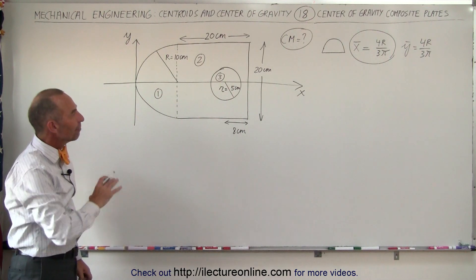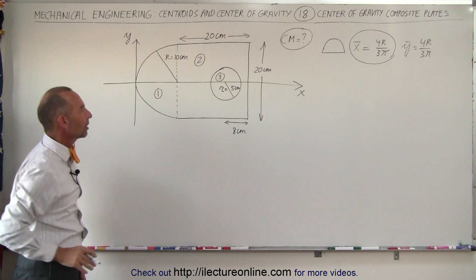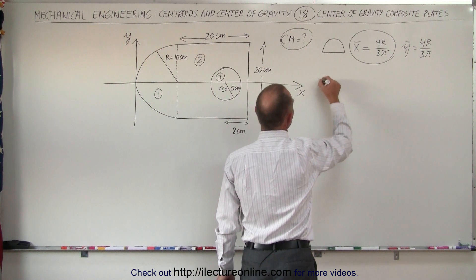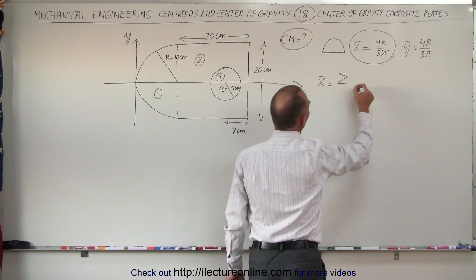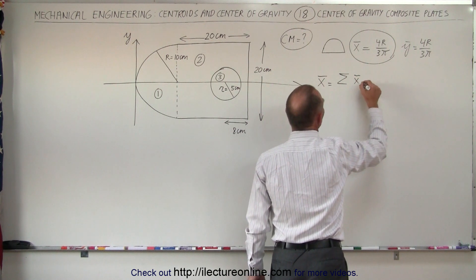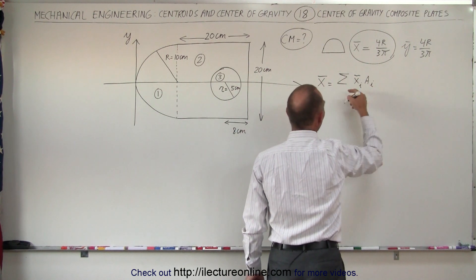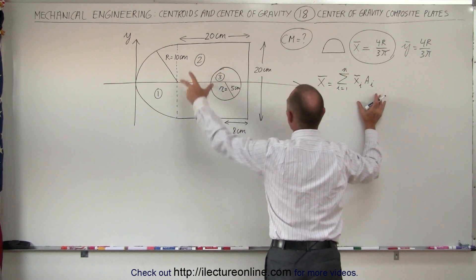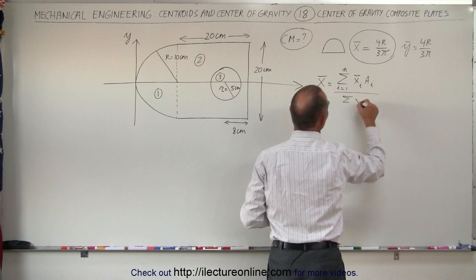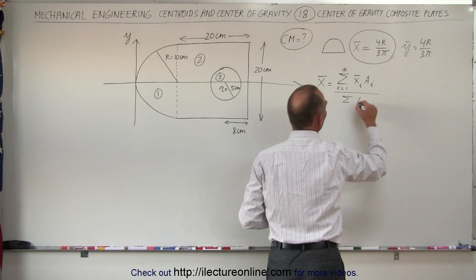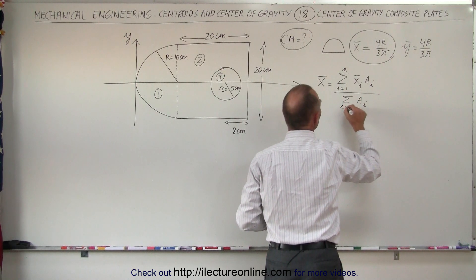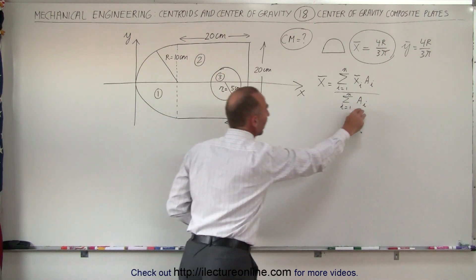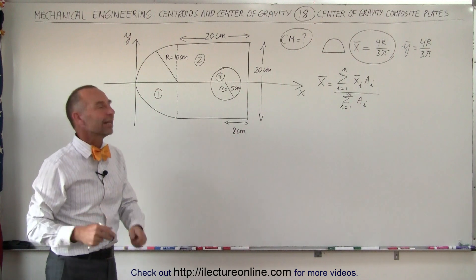Let's go ahead and find the center of mass of this particular object. We still use the equation that the x-coordinate is equal to the sum of the x-coordinate of all individual pieces multiplied times their areas, summed from i equals 1 to n. But remember, if there's a hole, we actually subtract the hole from the rest, divided by the sum of all the areas from i equals 1 to n. With the area as well, if there's a hole, we subtract the area — it's like subtracting a negative quantity.